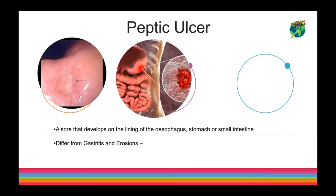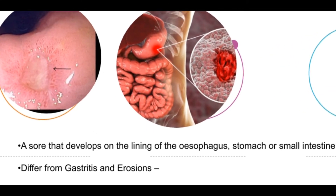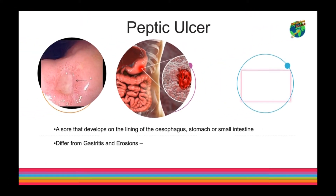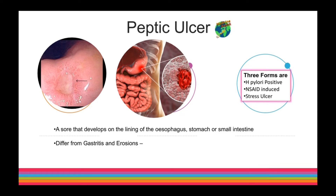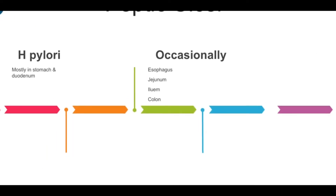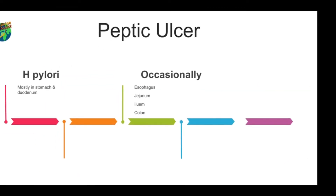The pictures depicted here clearly show how peptic ulcer appears. There are three forms of peptic ulcer: the first is H. pylori positive ulcer, the second is NSAID-induced ulcer, and the last is stress ulcers. Helicobacter pylori is mostly found in the stomach and duodenum. Peptic ulcer can also be found in the esophagus, jejunum, ileum and colon.